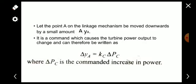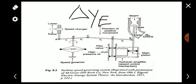The command signal delta_pc sets into motion a sequence of events: the pilot valve moves upwards, high pressure oil flows onto the top of the main piston moving it downwards. When the pilot valve moves upwards, point D moves upwards, high pressure oil comes to the piston through this path, the piston moves downwards, the steam valve opens, and consequently the turbine-generator speed and frequency increase.